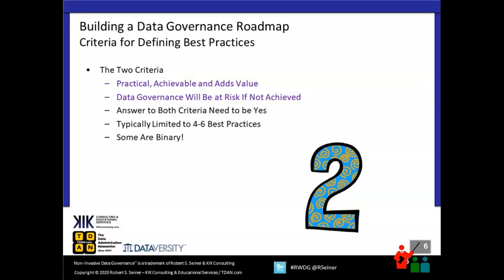Two criteria are really important when determining what's best practice. First, they need to be practical, achievable, and add value — you need to be able to answer yes to that. Second, will your data governance program be at risk if you don't achieve these best practices? If you can answer yes to those two questions, you should consider including them as best practices you're assessing against in order to build out your roadmap. Organizations typically limit themselves to four to six best practices.